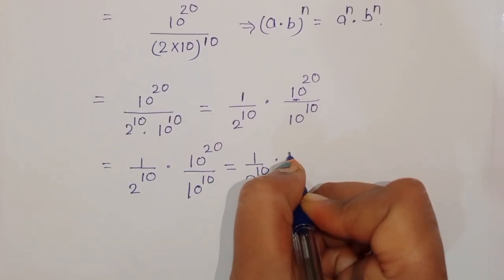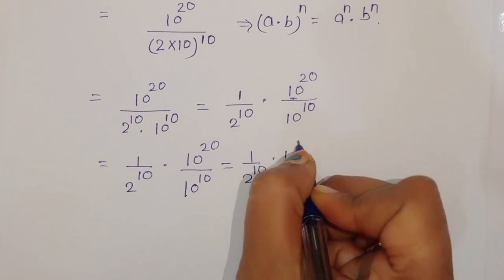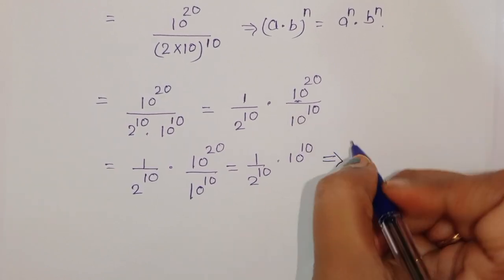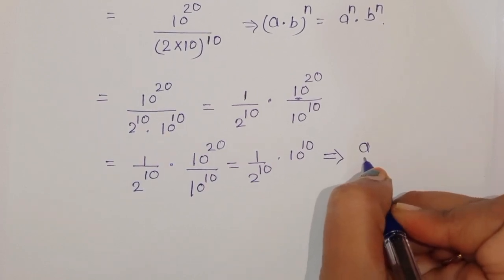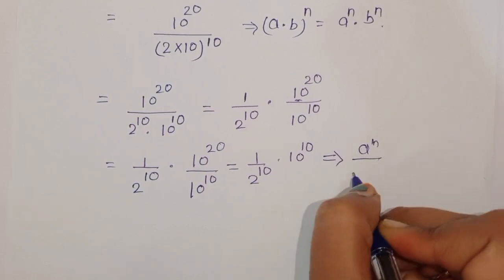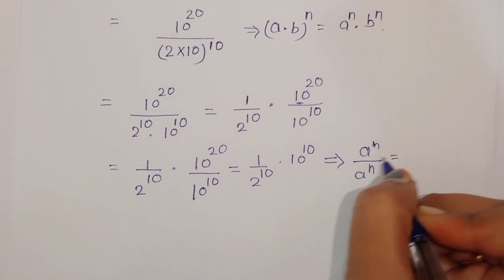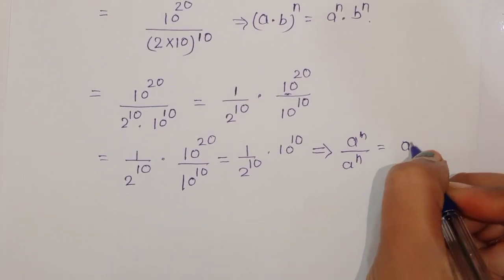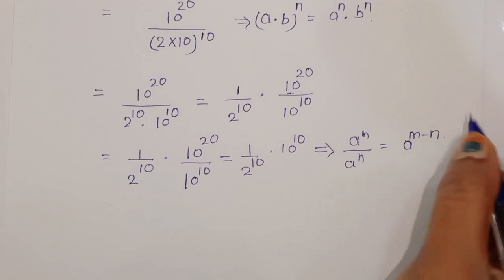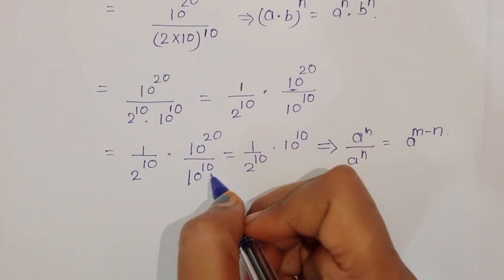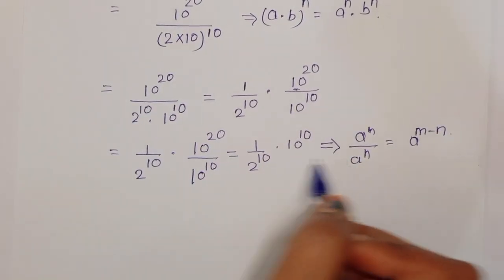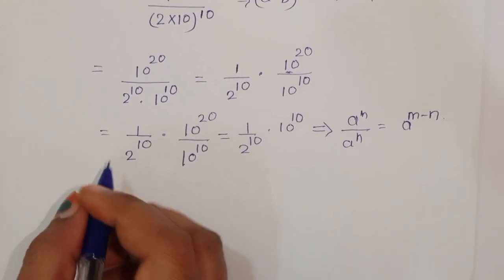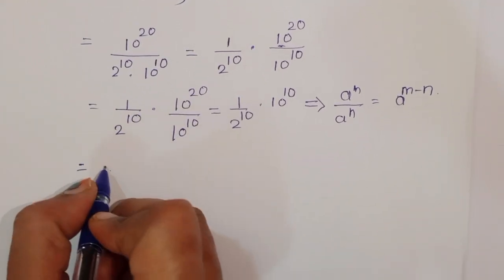We use the formula: a raised to m divided by a raised to n is equal to a raised to (m minus n). Here the base is 10 on both sides, so we get 10 raised to (20 minus 10), which is 10 raised to 10.